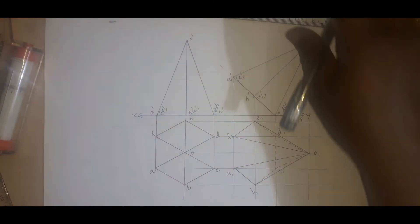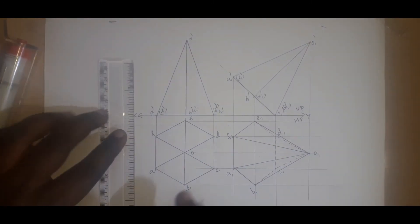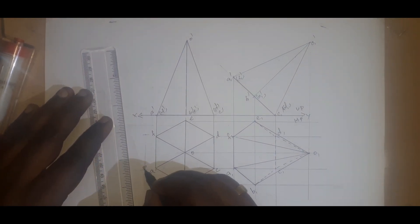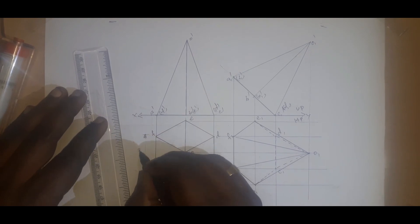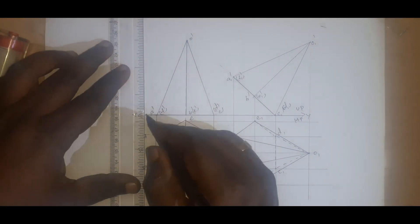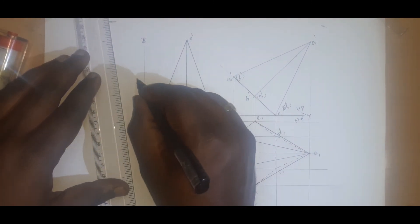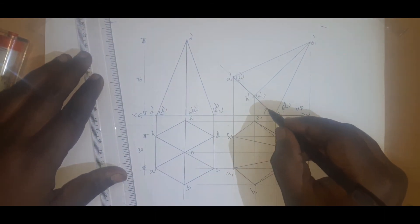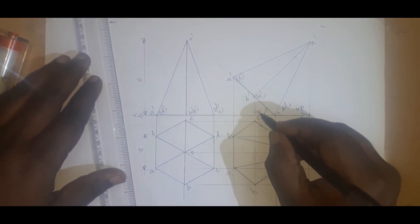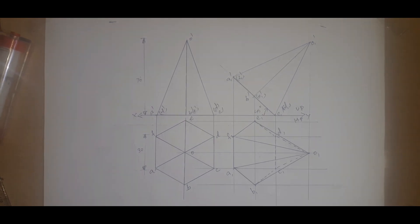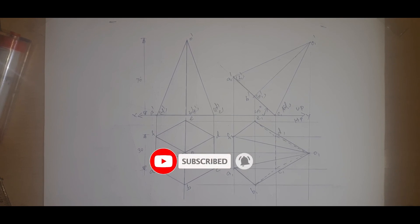Now I am going to mark the dimensions. This edge is 30 mm, here the height is 70 mm, and this angle is 45 degrees — the base makes 45 degrees with XY or HP, as given in the problem. So this is your complete problem. Thank you.